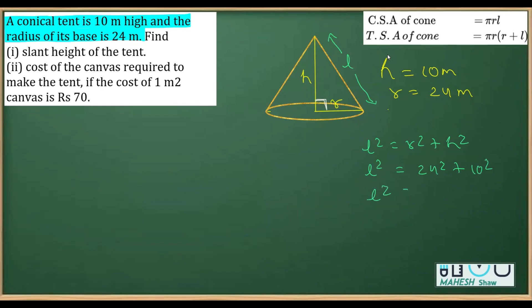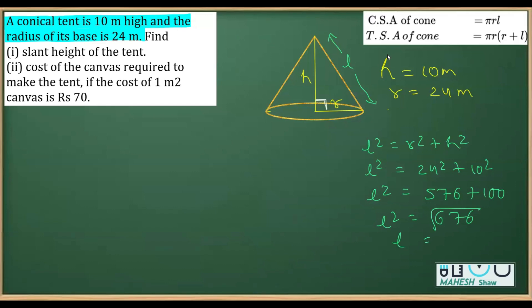24² = 576 and 10² = 100. So l² = 576 + 100 = 676 = 26². Therefore l = 26 meters.